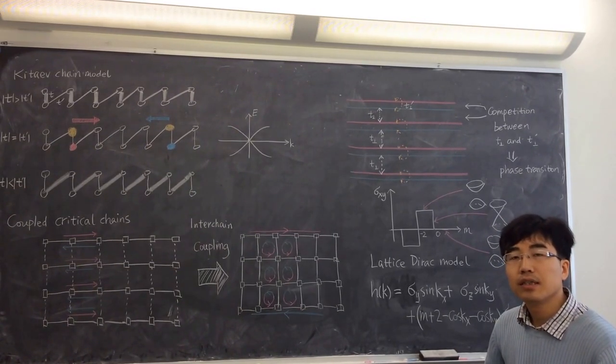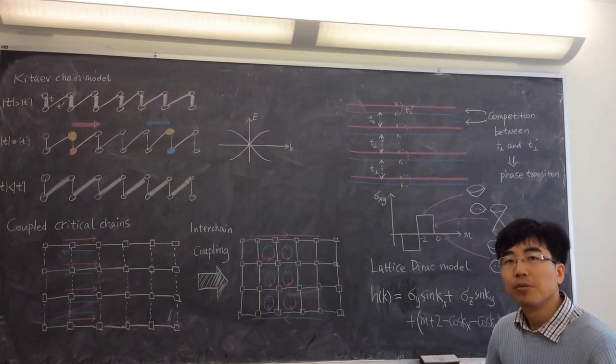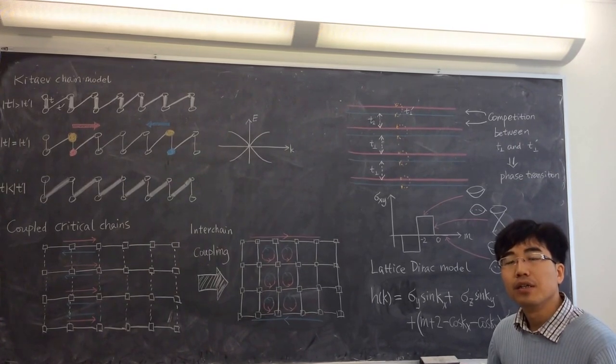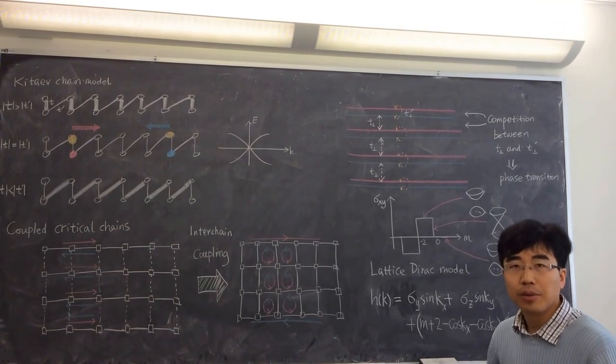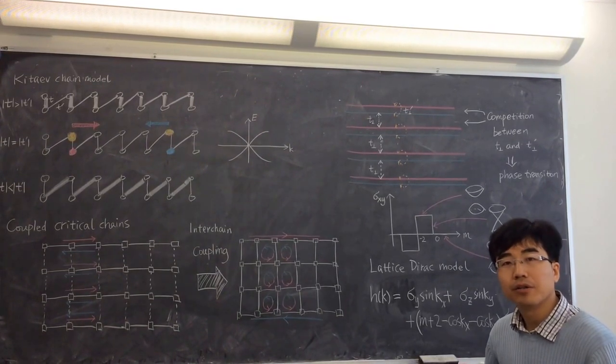And we also discussed that there is this critical point between quantum Hall state and trivial state. The same kind of critical point exists in the ordinary quantum Hall state. But there it's less transparent what happened at the critical point.